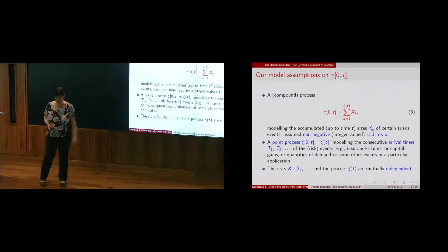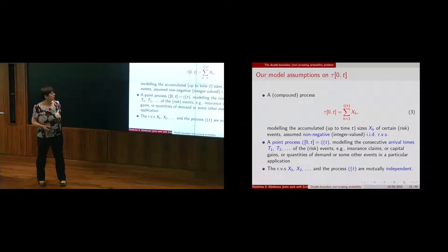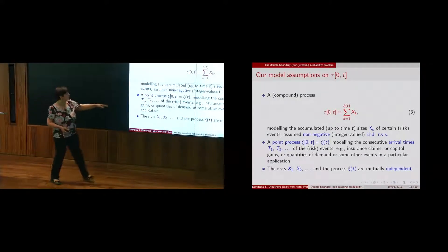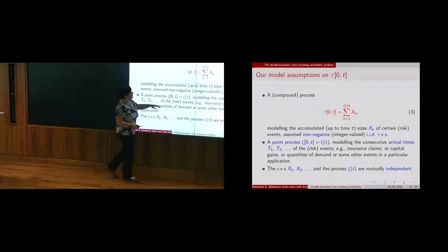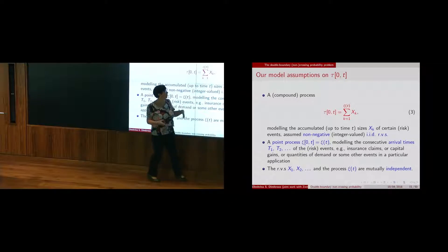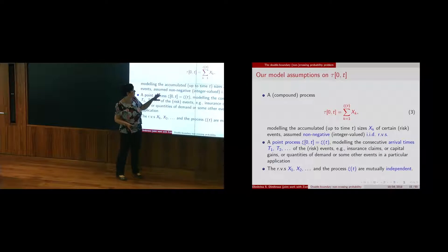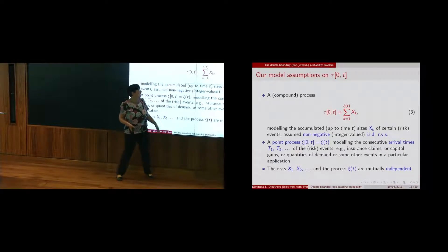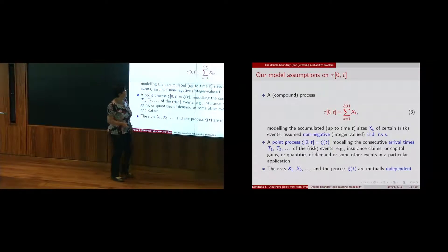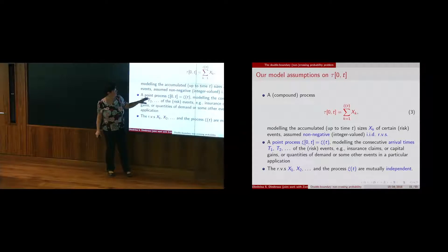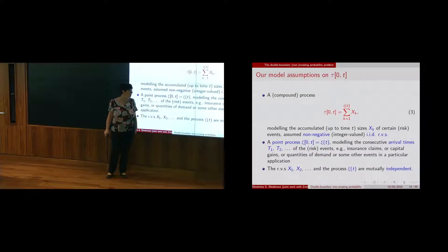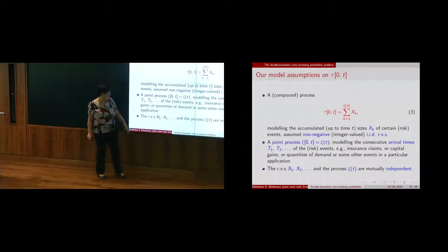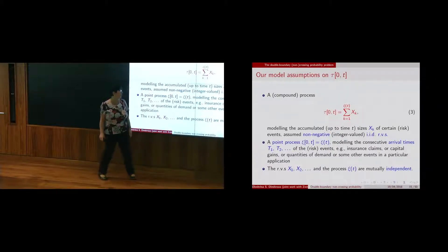Having these applications in mind, the assumptions for the model we consider are as follows. The process tau is a compound process: tau is a sum of xk, where xk are the sizes of certain events. We assume them to be non-negative iid random variables; the assumption of being integer-valued is non-restrictive, as we'll see. The arrival process xi is a point process modeling the consecutive arrival times T1, T2, etc. of certain events, and the xk's are independent from the arrival process xi.